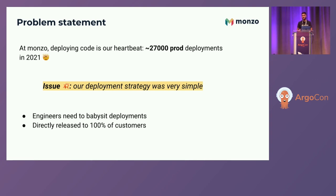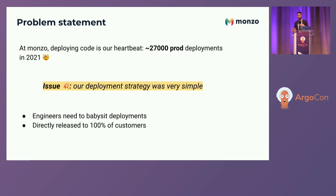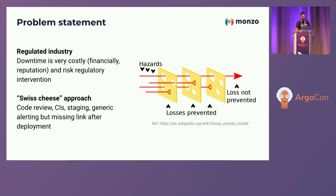We realized that although we deploy so often daily, our deployment strategy was kind of simple — it still relied on Kubernetes native deployments with a rolling update strategy. Engineers had to watch deployments, look at Grafana dashboards, and every time you do a new release you basically release it directly to 100% of customers. As a regulated bank, downtime is very costly financially and reputationally.